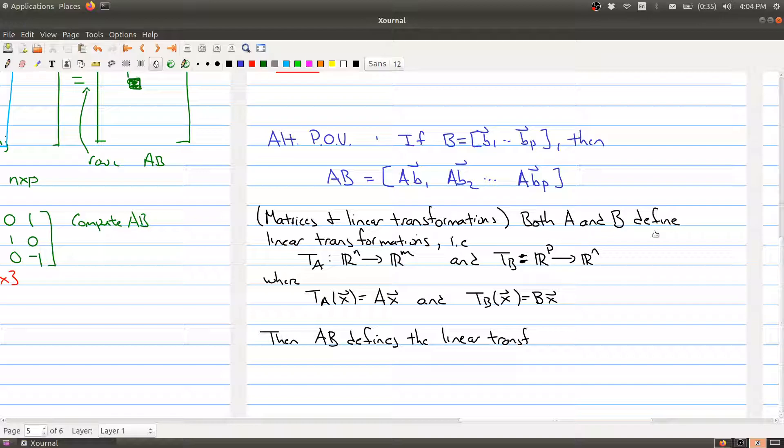Now, both of those matrices define linear transformations, right? A defines a matrix from R^n to R^m by multiplying by the matrix A. And B defines a linear transformation from R^p to R^n where we multiply by the matrix B. So what is the matrix A times B defining?